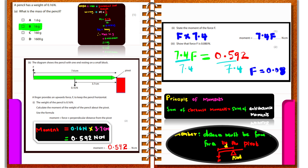The diagram shows a pencil with one end resting on a small block — that end is the pivot. A finger provides an upward force F to keep the pencil horizontal. Using the formula moment equals force times perpendicular distance from the pivot, the moment due to the weight is 0.16 times 3.7 centimeters, giving 0.592 newton centimeters.